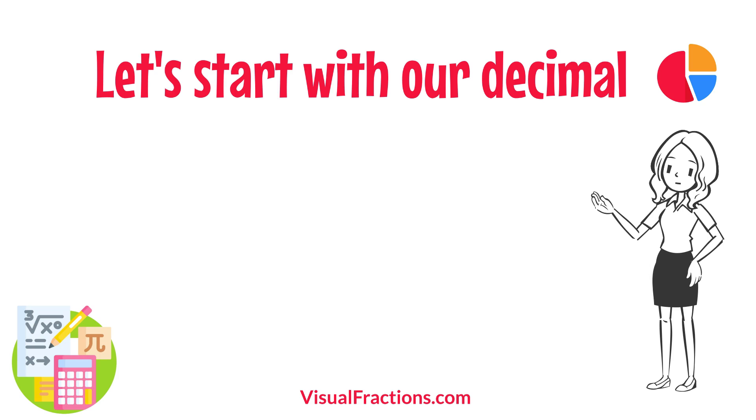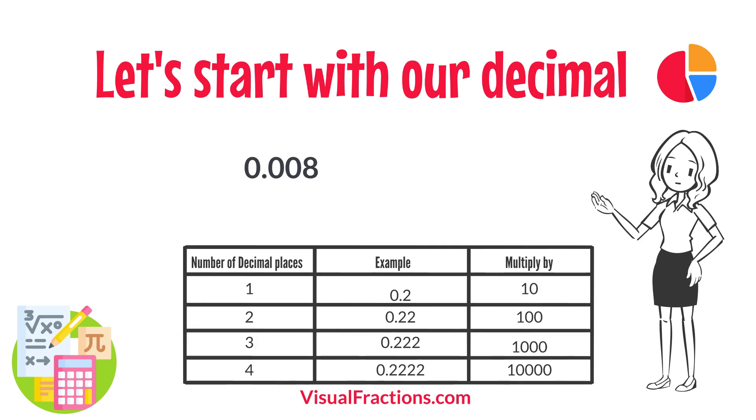Let's start with our decimal, 0.008. Notice there are three digits to the right of the decimal. This places it in the thousandths position.